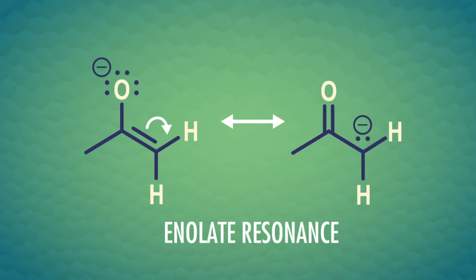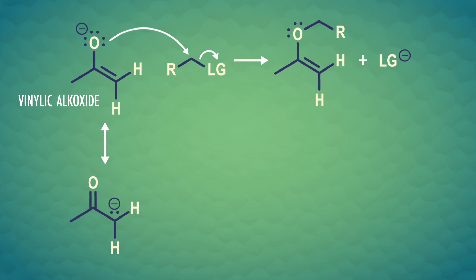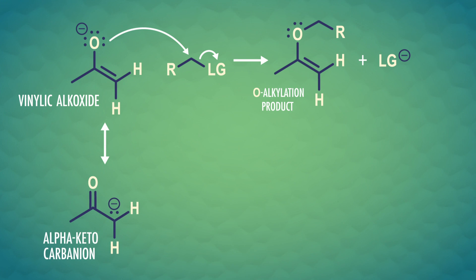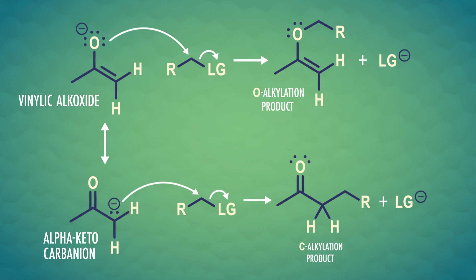There's one more thing we have to look out for in these alkylation reactions with enolates. Because they're resonance hybrids, they have a dual identity and two different ways of reacting. One part of the hybrid is a vinylic alkoxide — a carbon-carbon double bond with a negatively charged oxygen attached — where enolates react at the oxygen, giving us an enol derivative. But the other part of the hybrid is the alpha-keto carbanion — a carbonyl group bonded to a negatively charged carbon — where enolates react at the carbon, giving us an alpha-substituted carbonyl. We can often favor the reaction at carbon by carefully choosing our reaction conditions, but all these complications could lead to mixtures of products.